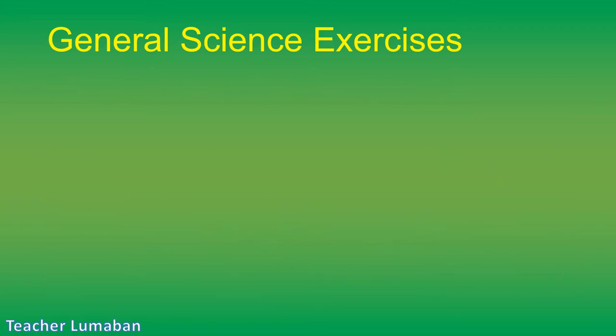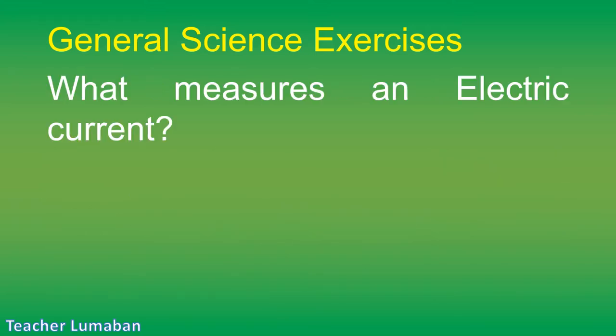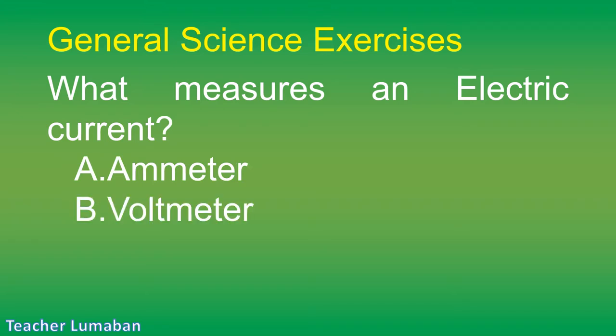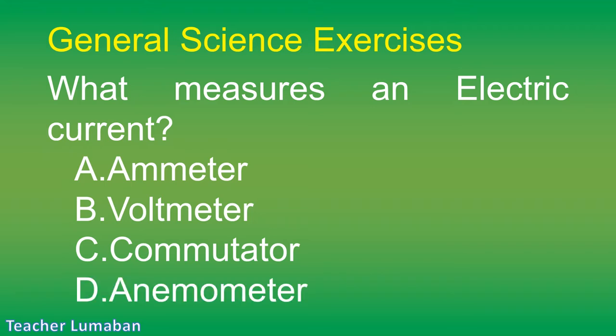What measures an electric current? Letter A: ammeter. Letter B: voltmeter. Letter C: commutator. Letter D: anemometer.